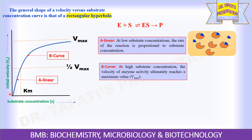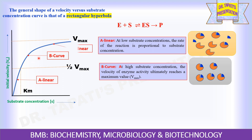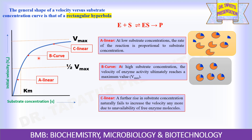At high substrate concentration, the velocity of enzyme activity ultimately reaches a maximum value known as Vmax, because finally a stage comes when all the enzyme molecules are fully occupied by the substrate molecules, showing maximum velocity. The third phase is again linear because a further rise in substrate concentration fails to increase velocity anymore due to unavailability of free enzyme molecules. At Vmax, an increase in substrate concentration does not cause any increase in velocity; hence it becomes a zeroth-order reaction, and the rate of reaction becomes dependent on the ES complex, not on the concentration of substrate.